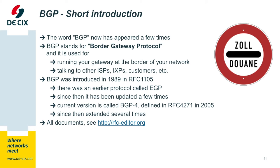What is BGP? BGP stands for Border Gateway Protocol, and this basically gives it away — it runs on the border of your network. It talks to other ISPs, IXPs, or customers. It was introduced in 1989 as a successor of an earlier protocol named EGP, the Exterior Gateway Protocol. Since then it was updated quite a few times. The current version is called BGP4 and it was defined in the form we use it today in 2005. By the way, all these specifications are publicly available at rfceditor.org.